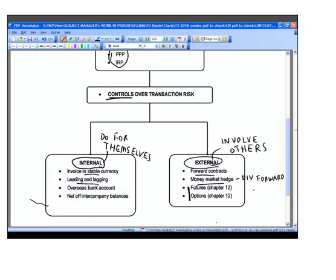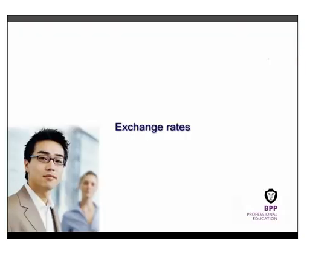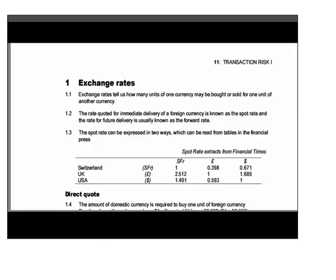Before we get into the detail, it's important to introduce some terminology around exchange rates. An exchange rate tells us how many units of one currency can be bought or sold for another currency. The rate for immediate delivery of a foreign currency is called the spot rate — what is the price of another currency now? The forward rate is the term used for the rate quoted for future delivery of a currency, for example if you want currency delivered in three months' time.